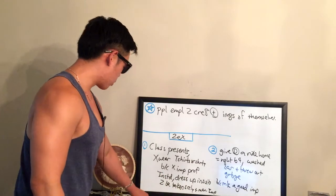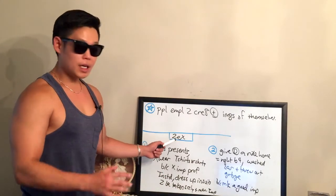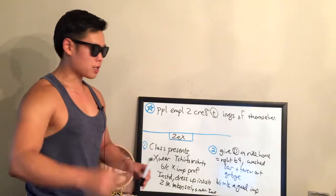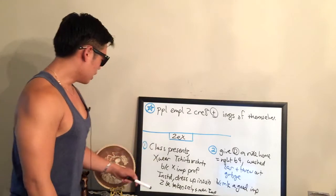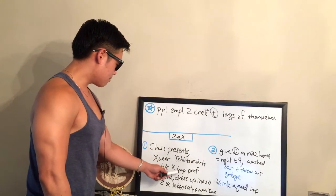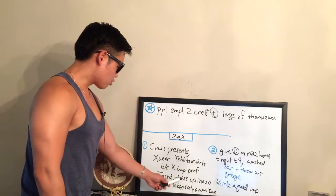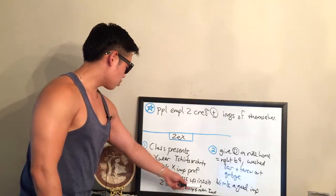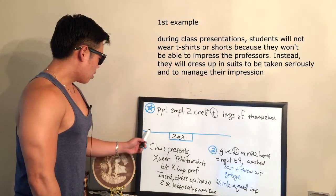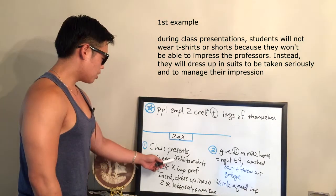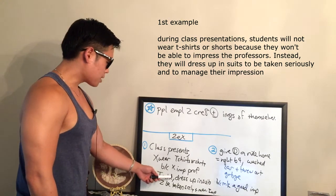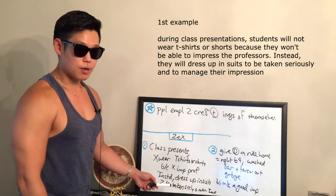Now let's look at what I actually wrote on the whiteboard. At the beginning of the lecture, the professor said 'let me give you some examples' — that's plural — so I immediately knew the professor would talk about two examples. The first example: class presentations — don't wear t-shirts or shorts because you won't impress the professor. Instead, dress up in suits to be taken seriously and manage the impression. To begin with, during class presentations, most students will not wear t-shirts or shorts because they won't be able to impress the professor; instead, they will dress up in suits.